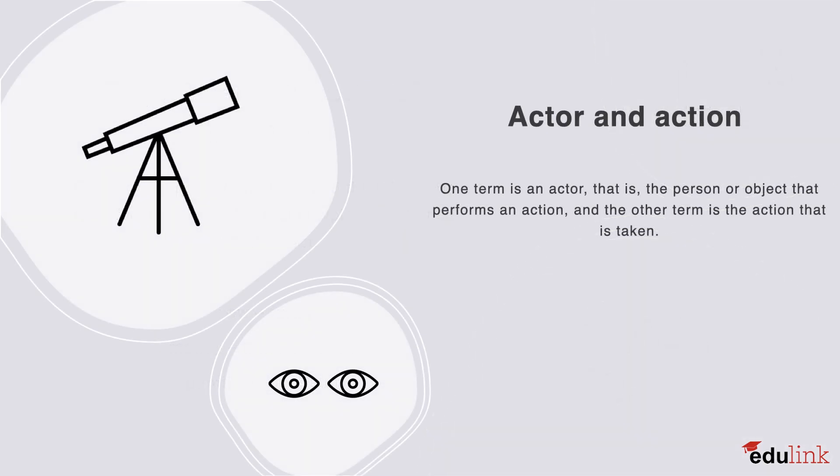Actor and action. This is where one term is an actor, so that is the person or object that performs an action, and the other term is the action that's taken. For example, a pencil is an actor to be able to draw. Air conditioning is an actor to be able to cool down. And telescope is an actor to be able to observe.